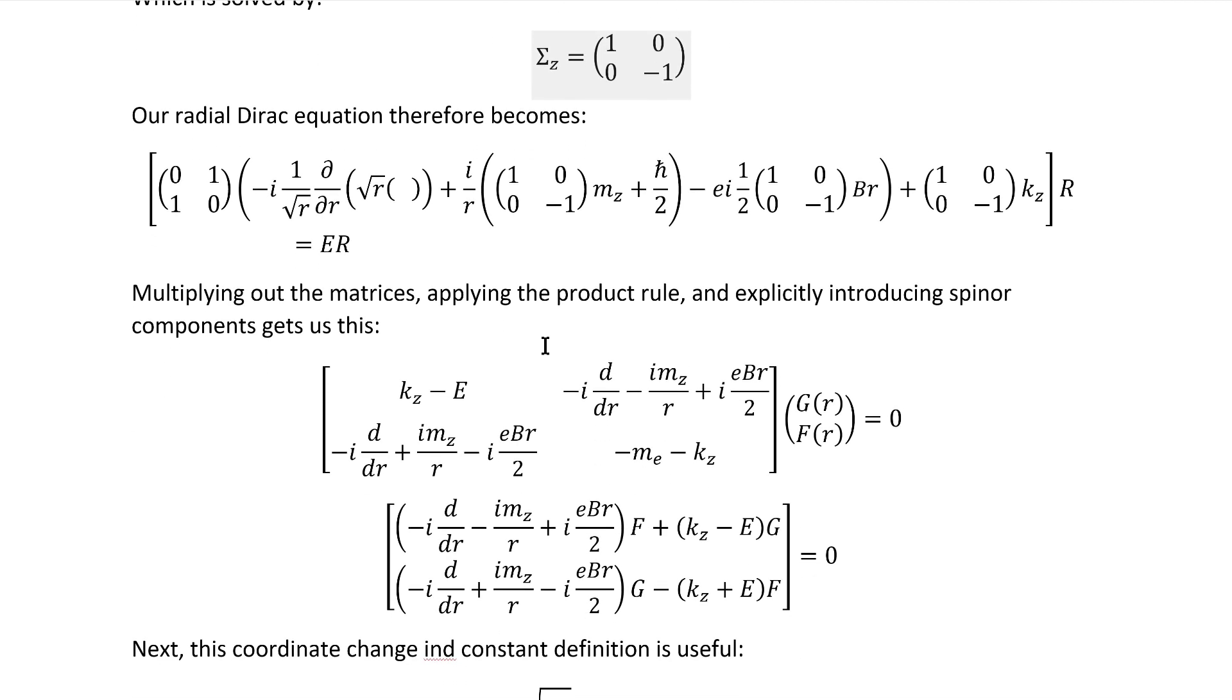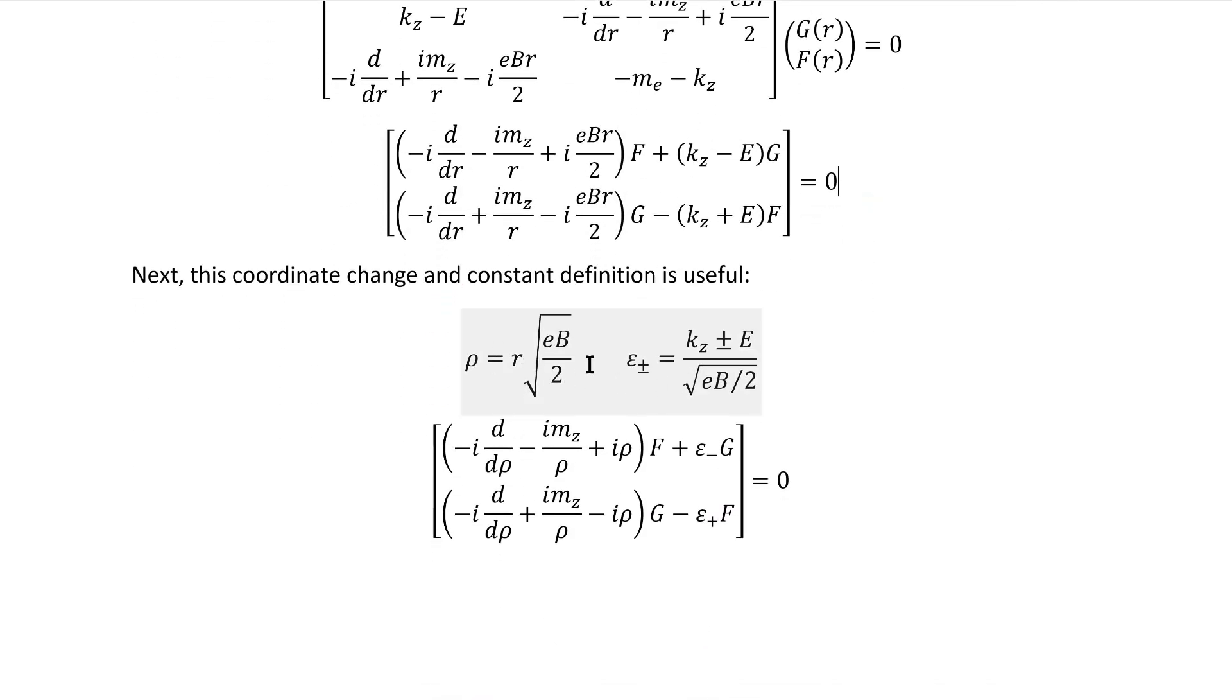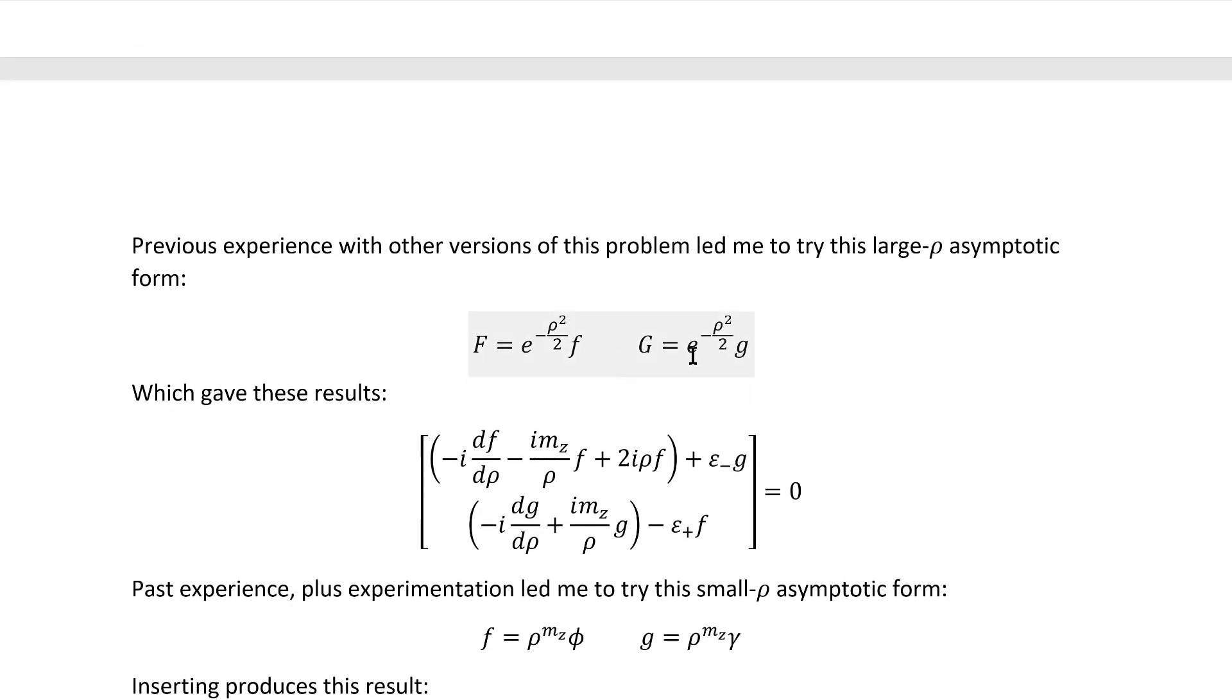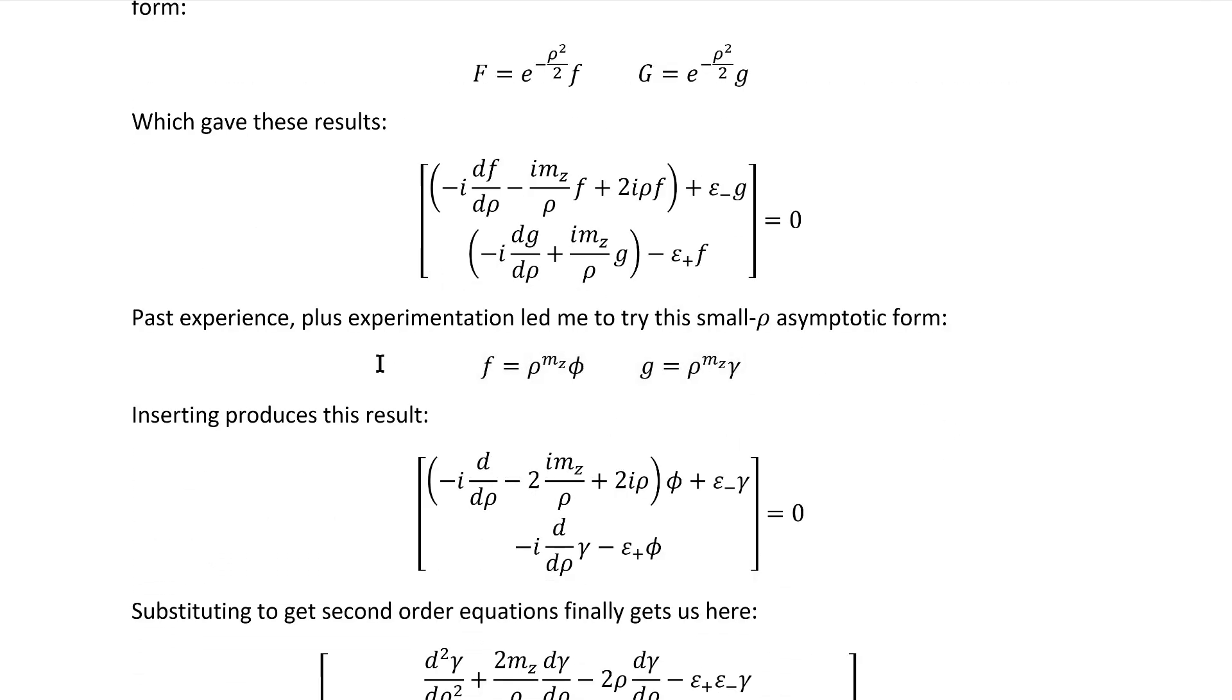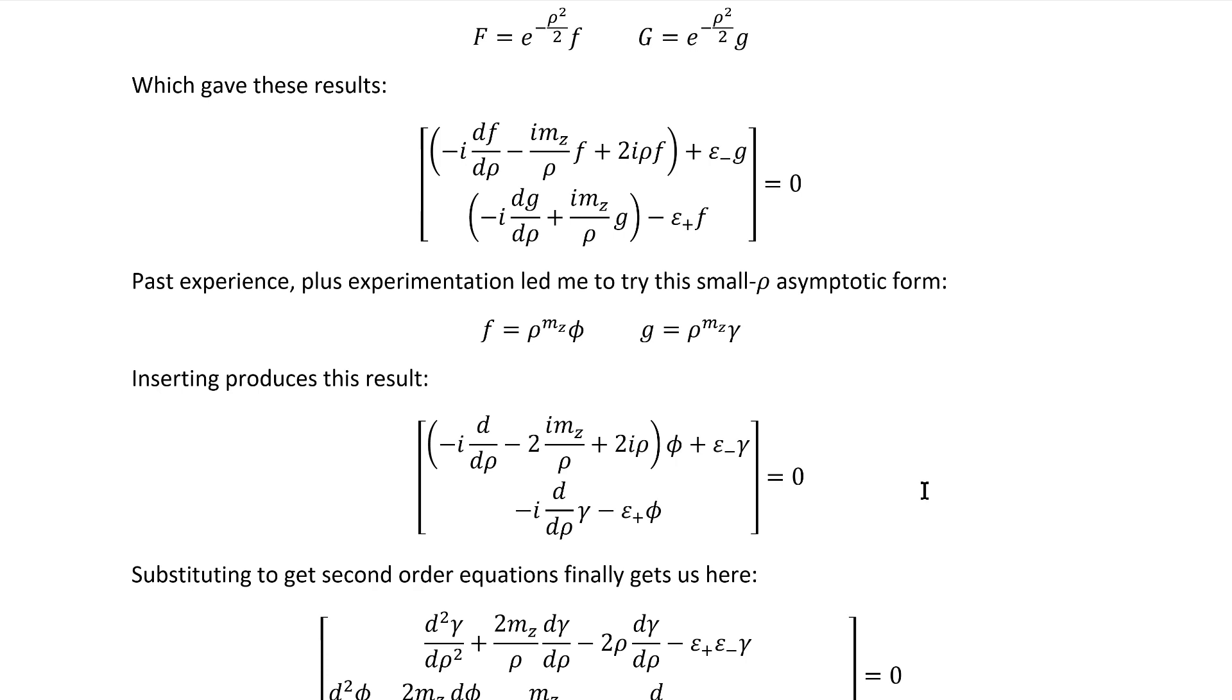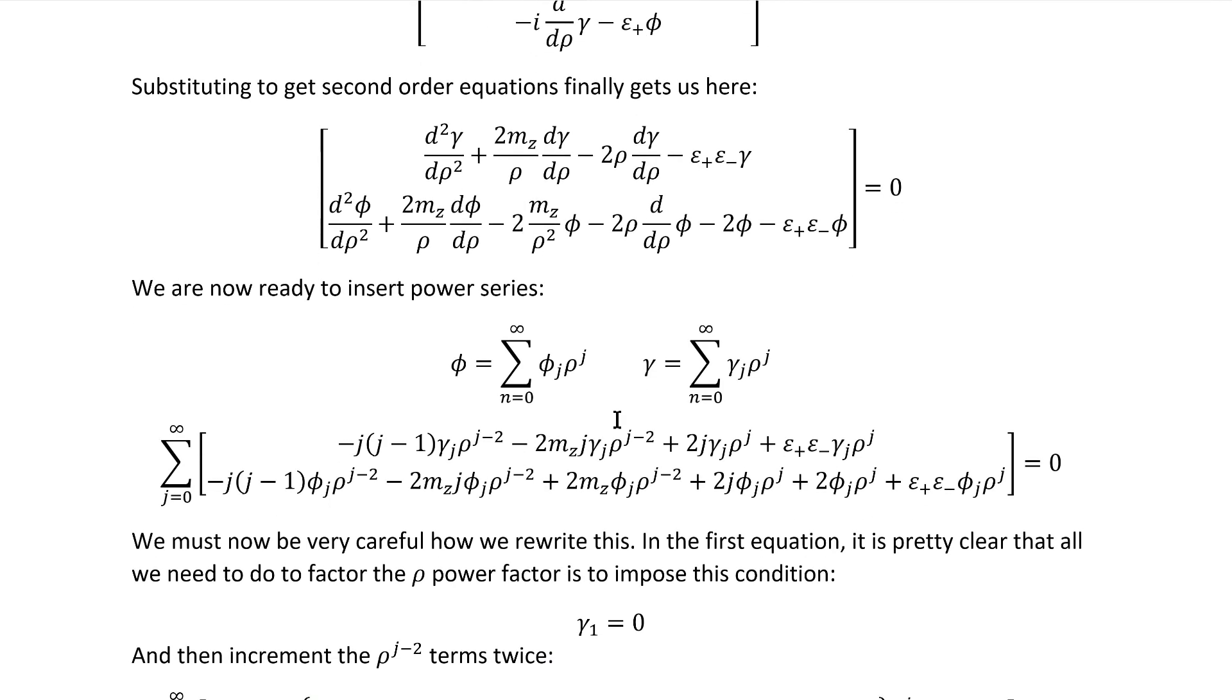Multiplying out the matrices, applying the dot product and explicitly introducing spinner components, gets us these two equations. Next, this coordinate transformation and this constant definition simplifies the equations down a lot. Previous experience with other versions of this problem led me to try these large r asymptotic forms. That got me these equations. And then more past experience plus some experimentation led me to try these small r asymptotic forms. And of course, you only know if your asymptotic forms were valid if the polynomial solutions that you insert end up yielding valid recurrence relations. Anyway, continuing on, substituting to get second order equations finally gets us here.